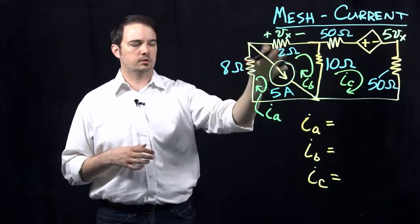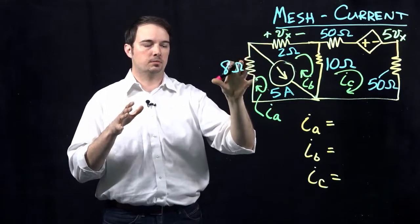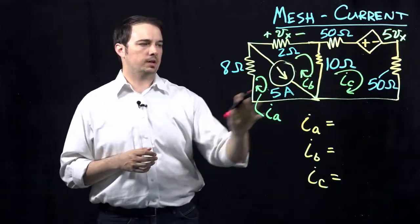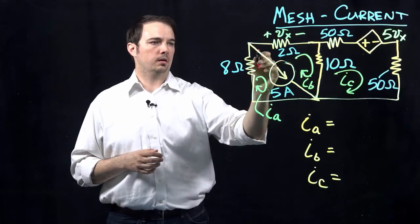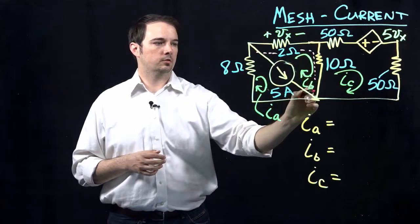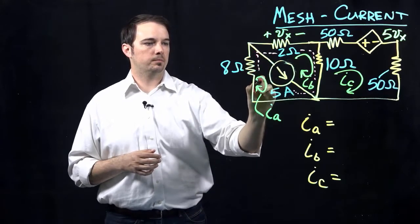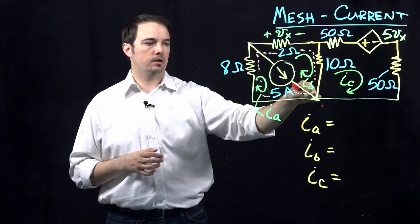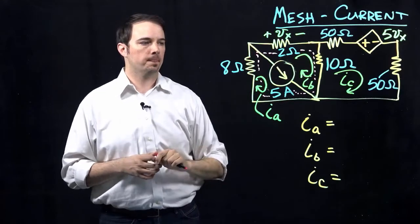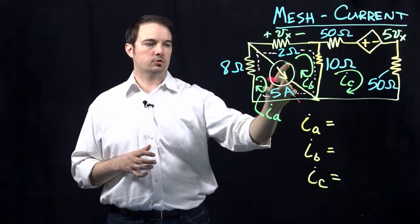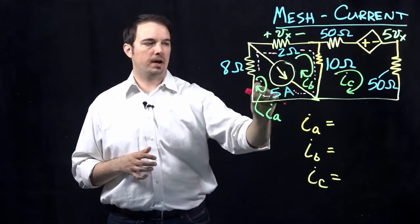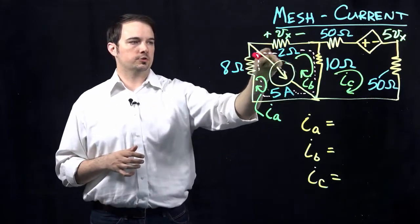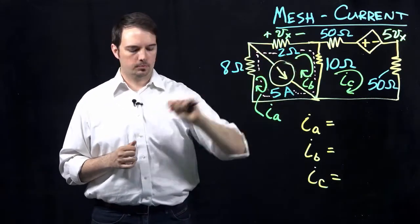This is called the super mesh, or we can apply the concept of the super mesh current in order to simplify the analysis on this side. We'll still have to write a mesh equation for the mesh current IC. Due to the super mesh that we have from the current source, we can write a single equation that's going to go all the way around this loop. Let's write this equation for the super mesh loop we have defined.